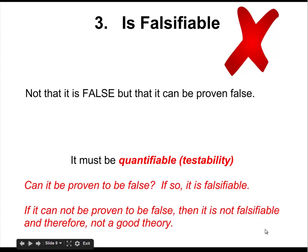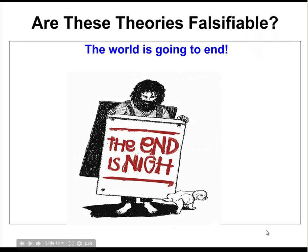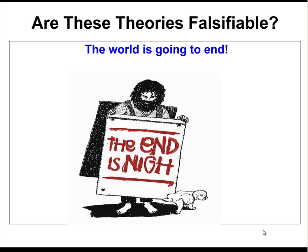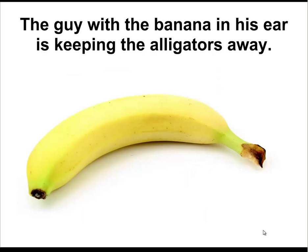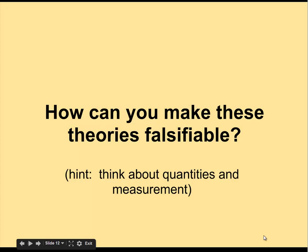In a nutshell, falsifiability means that I can prove this thing to be false — it doesn't mean it's going to be false, but that given certain information, it might be false. And if it could be proven to be false, then it fits the criteria of falsifiability. Consider this example: 'The world is going to end.' Is this theory falsifiable? Is there anything in that statement that can be proven to be false? What about this one: 'The guy with the banana in his ear is keeping the alligators away.' How can we make these theories falsifiable? Think about anything that you can measure — any quantity you can apply to those theories that makes them measurable.